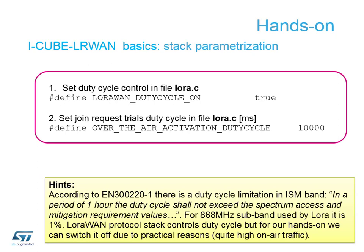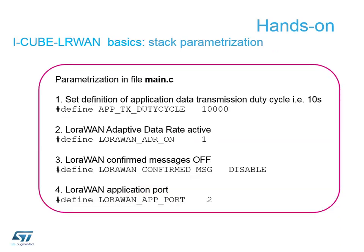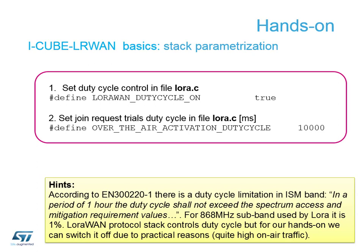In lora.c, LoRaWAN duty cycle is set to true, meaning we're going to follow the rules. On the AT command session the messages are very small - the size of whatever command you sent - so the 10-second duty cycle we've programmed is within the limits of EU regulations. We also have the over-the-air activation duty cycle: if your join fails first time round you'll wait 10 seconds before trying again, abiding by all regulatory rules. So we're actually following the rulebook in this particular example.